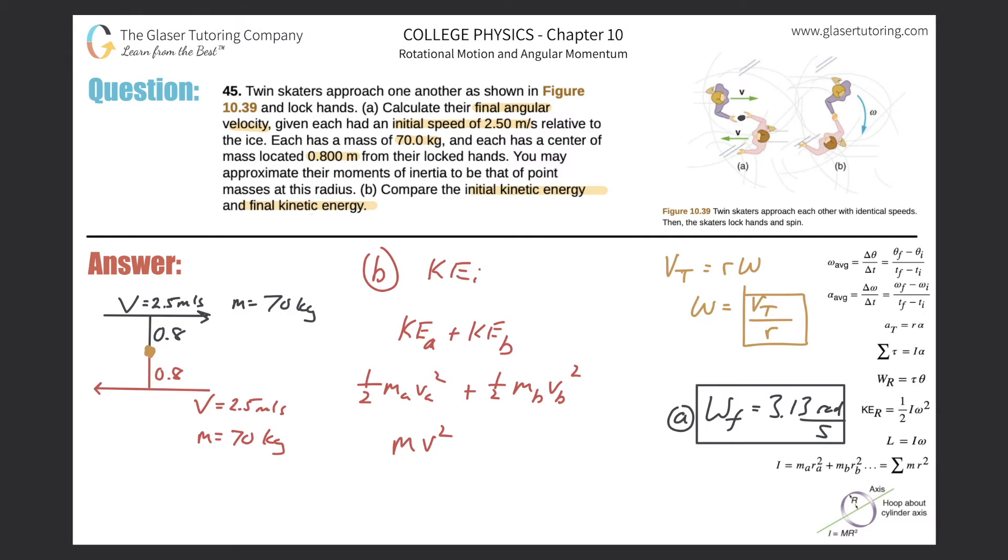This will be then 70 times 2.5 squared. So 2.5 squared times 70 and we get a value of about 438 or so. So KEI is equal to 438 joules. Great. So that takes care of one part to part B. Let's just move that answer over here. So this is for part B.